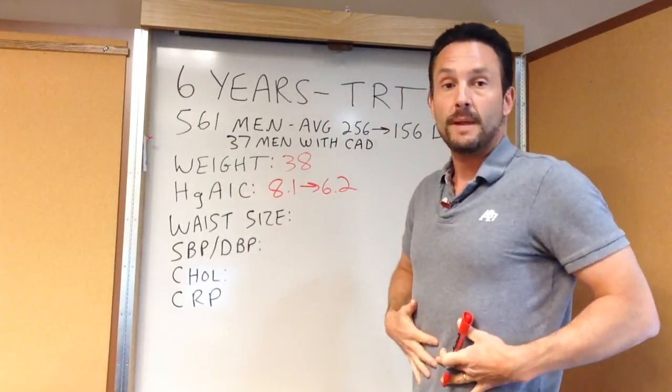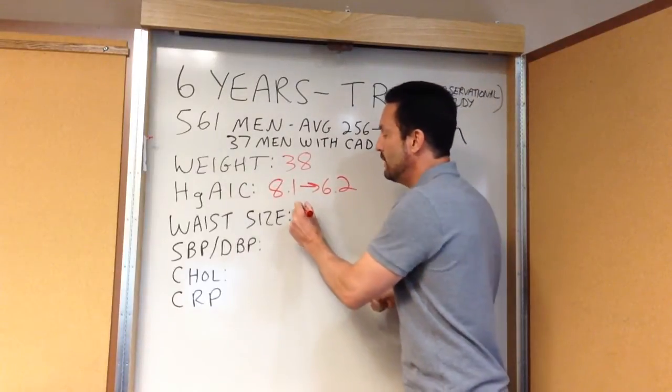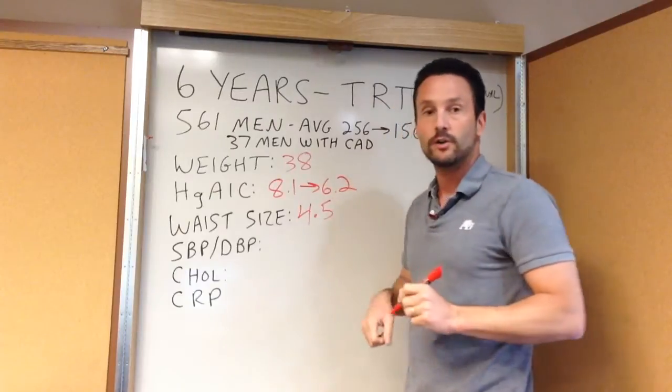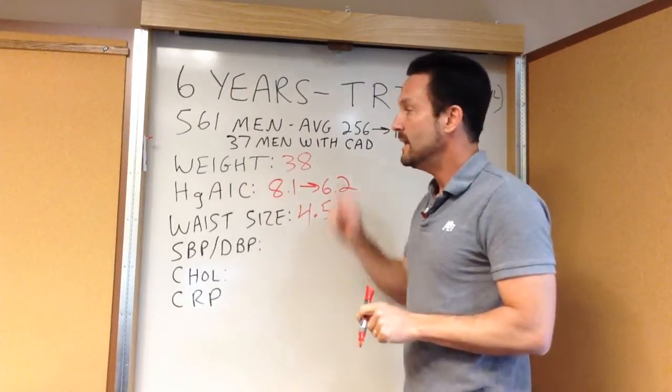Waist circumference, abdominal obesity associated with metabolic syndrome, was down 4.5 inches on average in the 156 men that were diabetic taking testosterone.